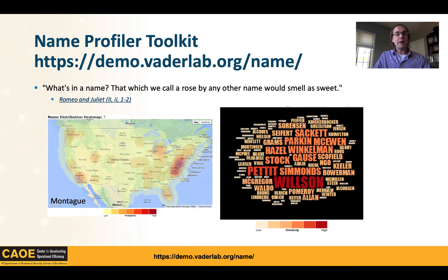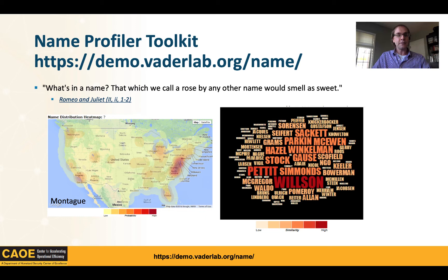We started thinking about how we can make a visual interface to explore the white pages — really, what's in a name? This is work done with Paul Longley from University College London, whose research demonstrated that people don't move around that much; names tend to stay in place aside from large migration waves. So we can take names from the phone book and create nice interactive maps. In Romeo and Juliet's case, I can query all addresses for the Montagues and make a heat map showing Montague is a North Carolina and Virginia sort of name.